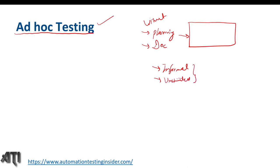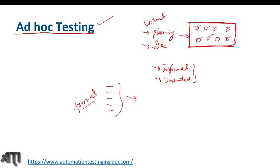To perform ad hoc testing, you must have prior knowledge about the application. In ad hoc testing, we have different functionalities and components in our application; we randomly check the functionalities of those components. Generally, ad hoc testing is performed after formal test case execution — once formal testing is done and time remains, we go for ad hoc testing to uncover additional important defects.